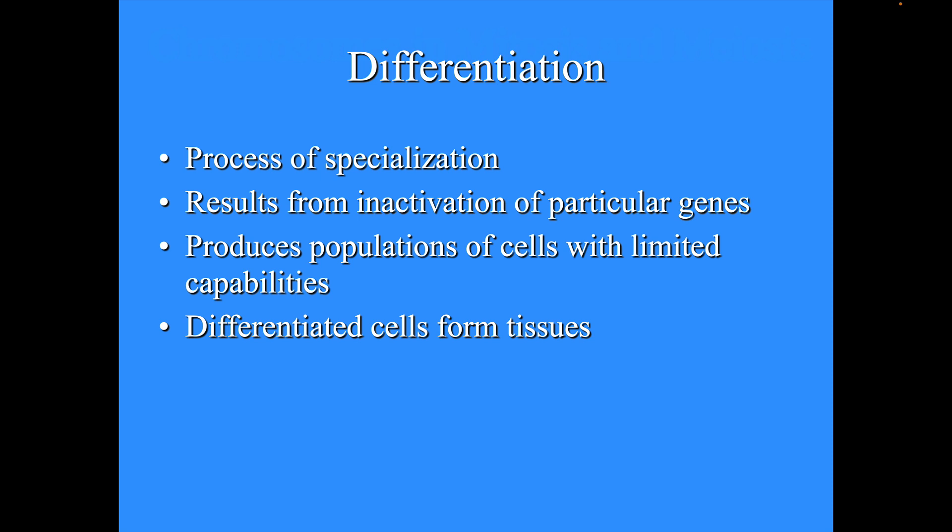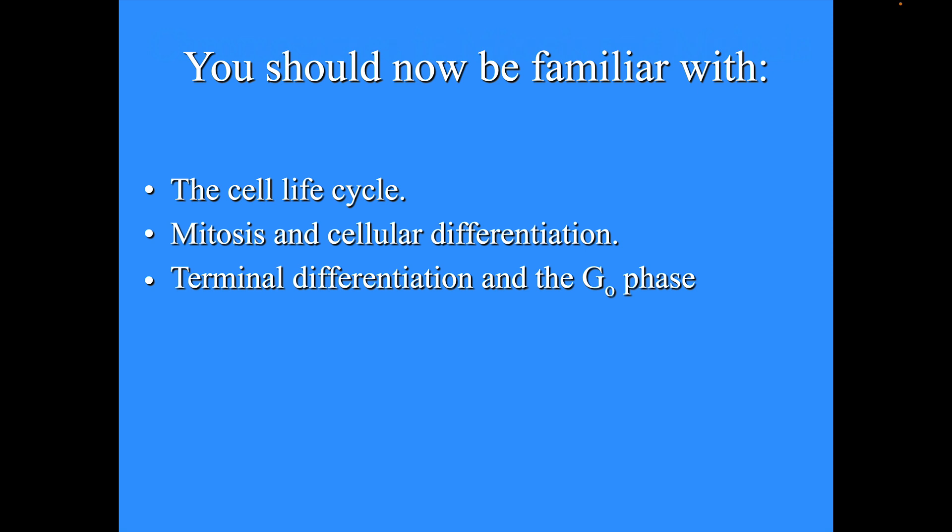Differentiation is the process of specialization. This results from the inactivation or activation of particular genes and produces populations of cells with limited capabilities — so blood cells will do blood cell things but can't do bone cell things. Differentiated cells will form tissues. You should now be familiar with the cell cycle, mitosis, cellular differentiation, terminal differentiation, and the G0 phase.